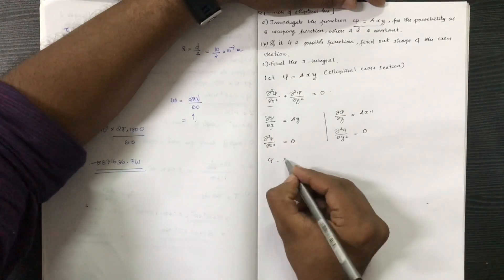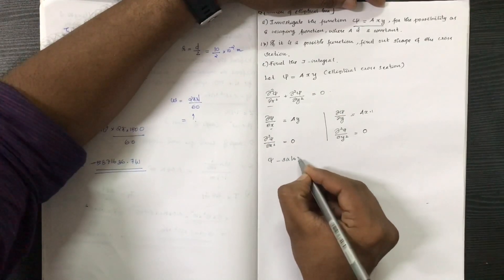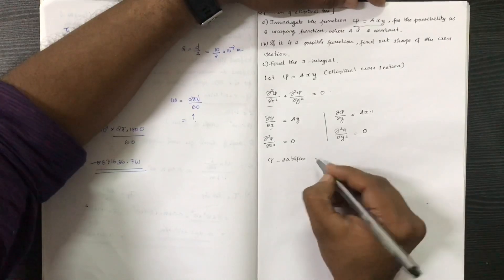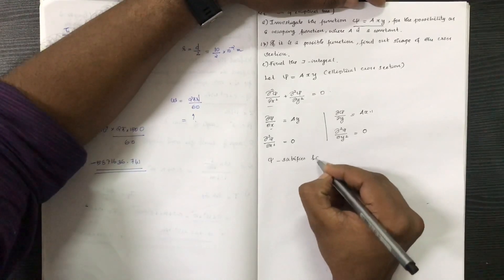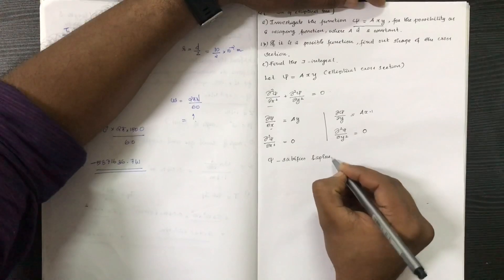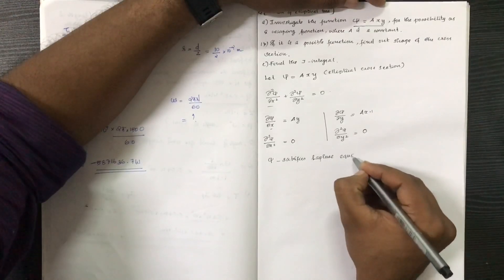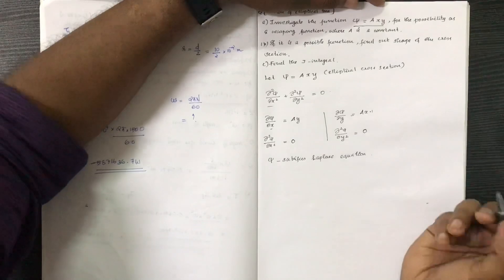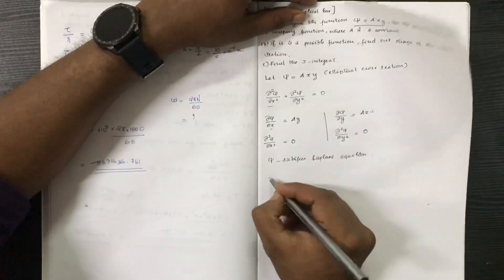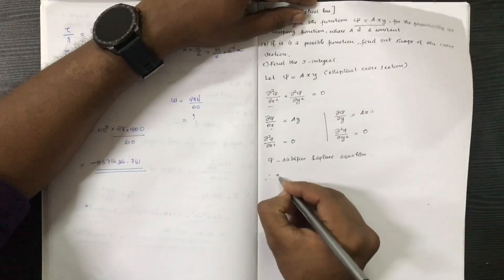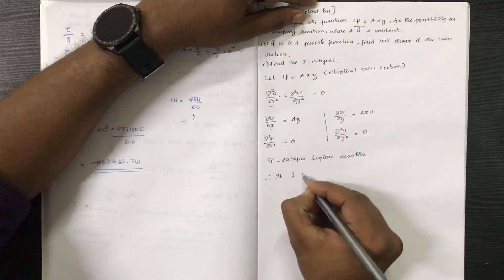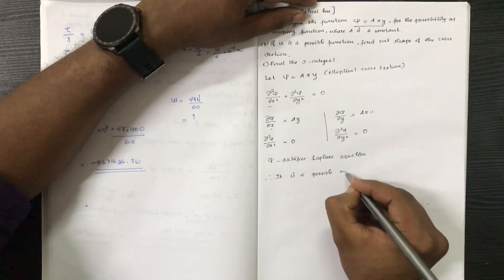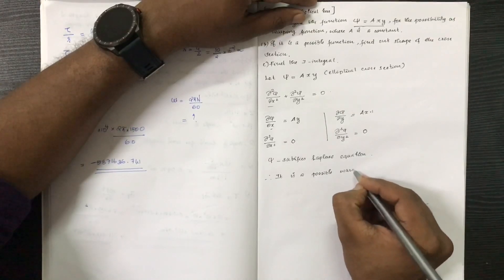So ∂²ψ/∂x² + ∂²ψ/∂y² = 0 + 0 = 0. The Laplace equation is satisfied. Therefore, ψ = axy is a possible warping function.